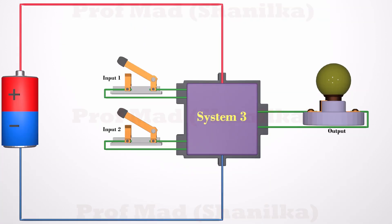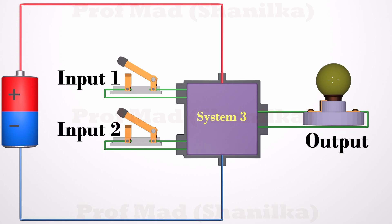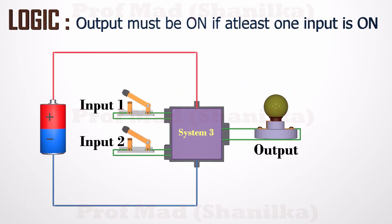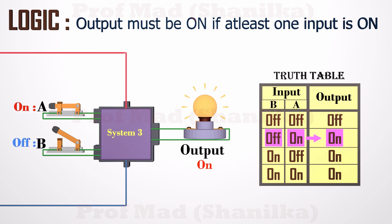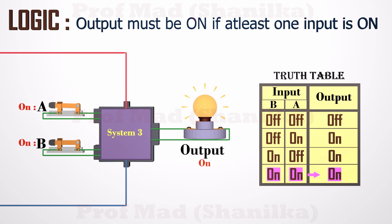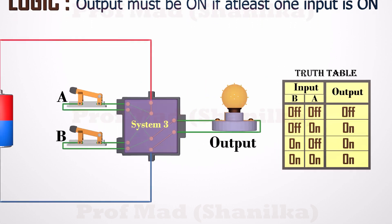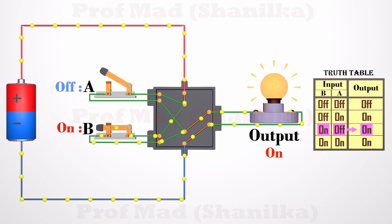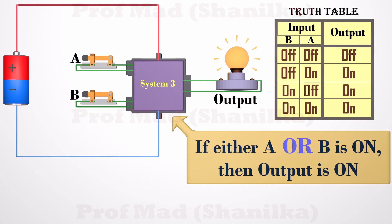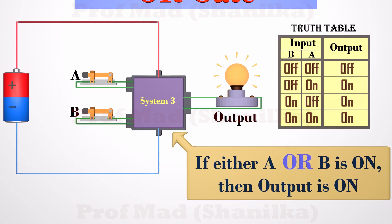Let's try another logic. Here we have two switches as input and a light bulb as output connected to another system. This system must work as follows: if either of the switches is on, the light must be turned on — that is our logic. Let's name the switches A and B. According to our logic, if neither A nor B is on, the bulb must be turned off. If A is on and B is off, the light must be turned on. If B is on and A is off, the light must be turned on. If both A and B are on, the light must be turned on. Either A or B being on turns the bulb on, so this logic is called OR logic.